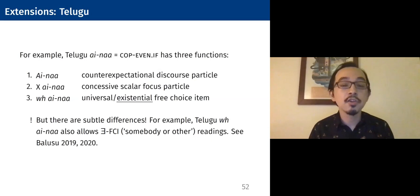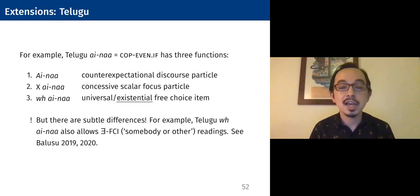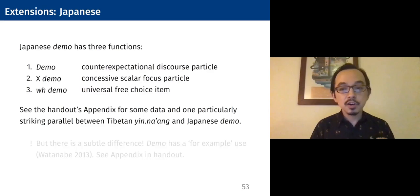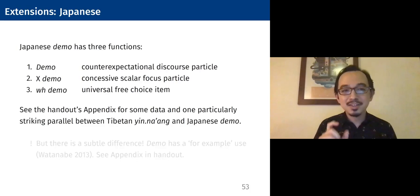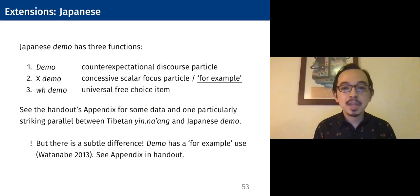Something similar happens in Japanese 'demo.' Demo has three functions: it's a counter-expectational, a concessive scalar particle, and it forms universal free choice items with WH. There are also some interesting and striking parallels between the uses of Tibetan yinang and Japanese demo, which I include in the appendix to the handout. But here too there's a slight twist, which is that in addition to the concessive scalar use, demo as a focus particle can adjoin to a constituent and give us an additional existential meaning. I'll include some examples of that also in the handout.